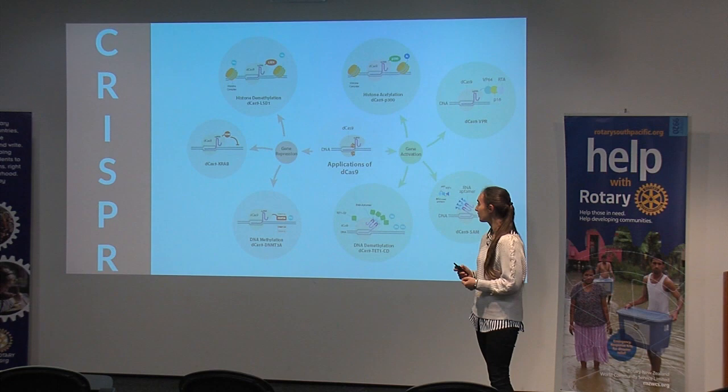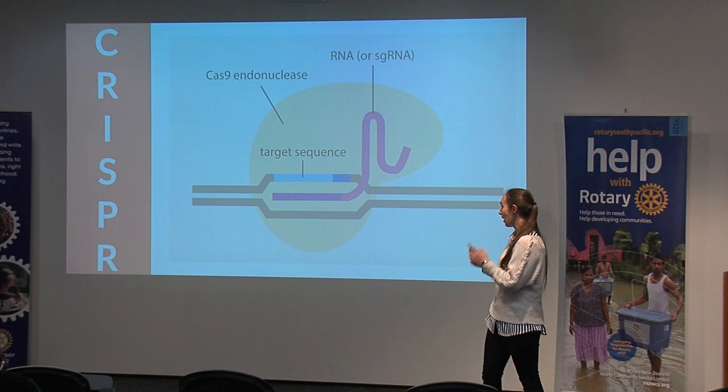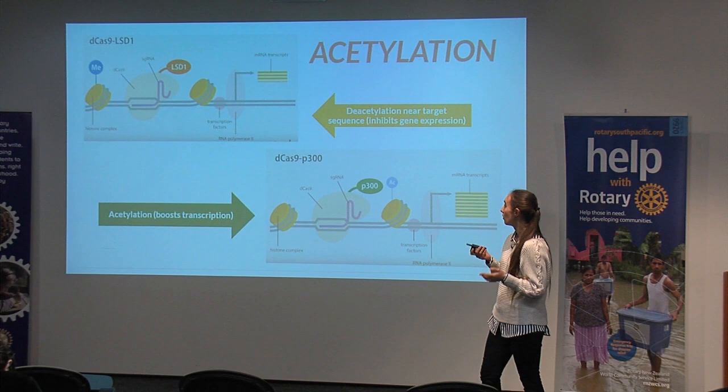CRISPR, our favourite little genetic tool. CRISPR uses sgRNA as the driver of the car, while they use D-Cas9 endonuclease as the car itself, which transports transcriptional factors. The beauty of CRISPR is that we can attach any enzyme, inducing methylation or acetylation.